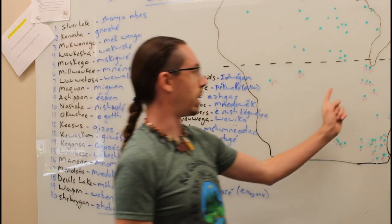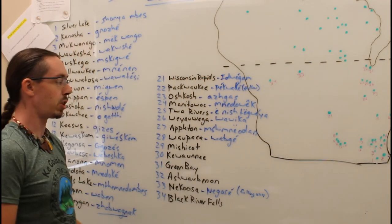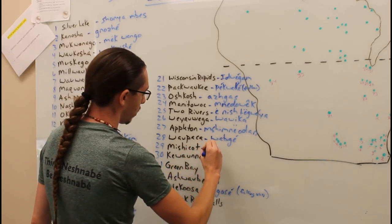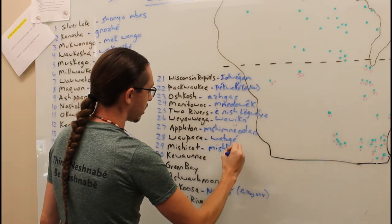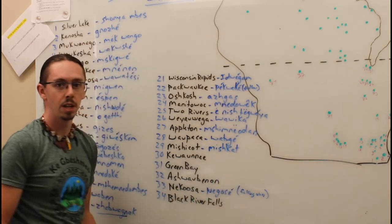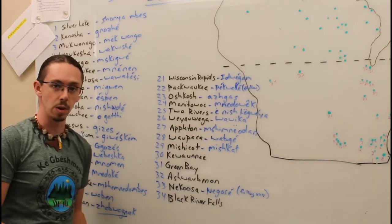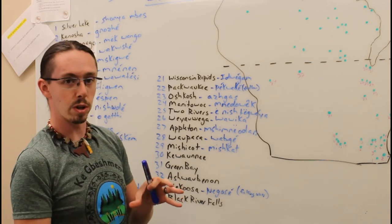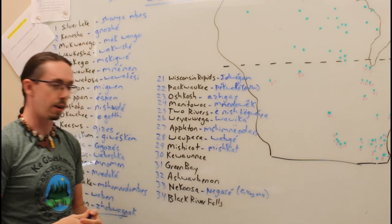If you go back over to the lake, number 29, we have Mishicot, Wisconsin. The correct pronunciation of that is Mishikot, which means hairy leg. The one that is referring to is a great horned owl. Their entire leg all the way to their foot is really fuzzy with those feathers.